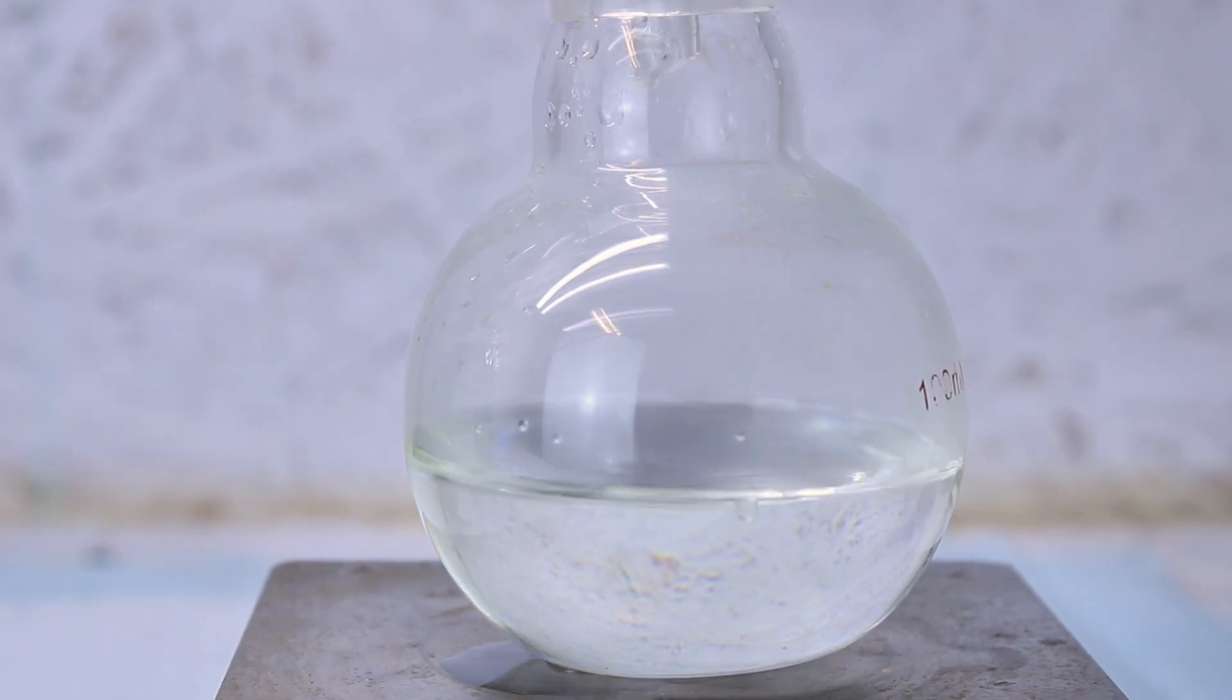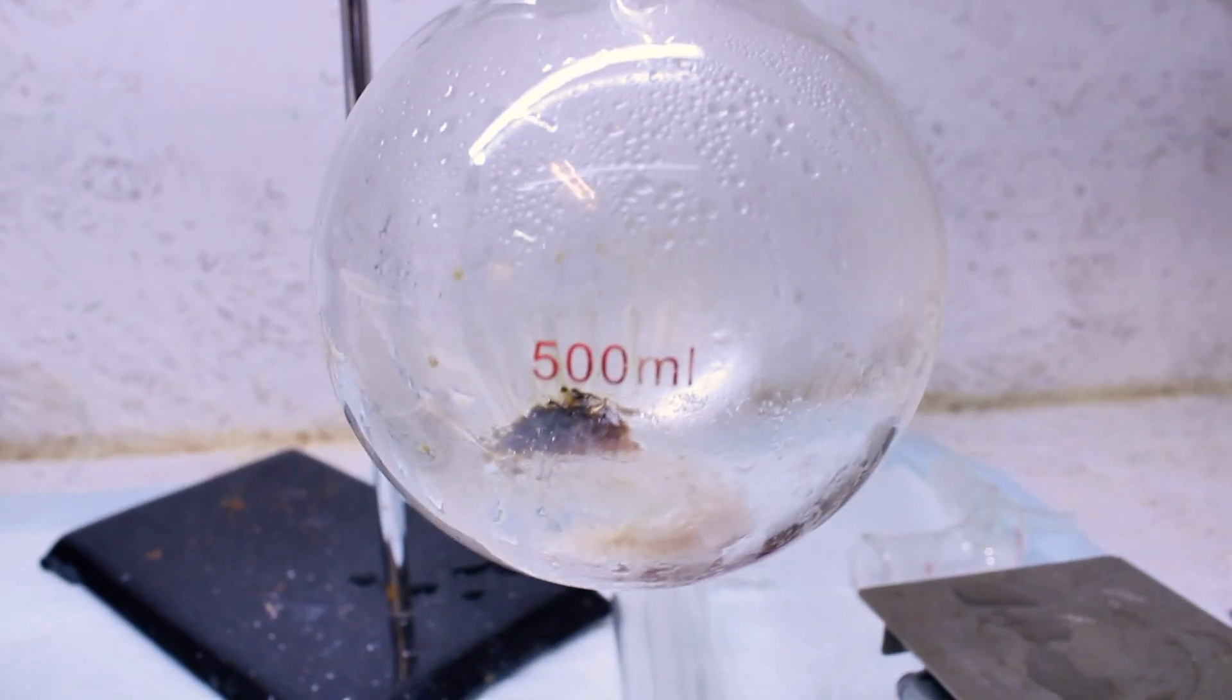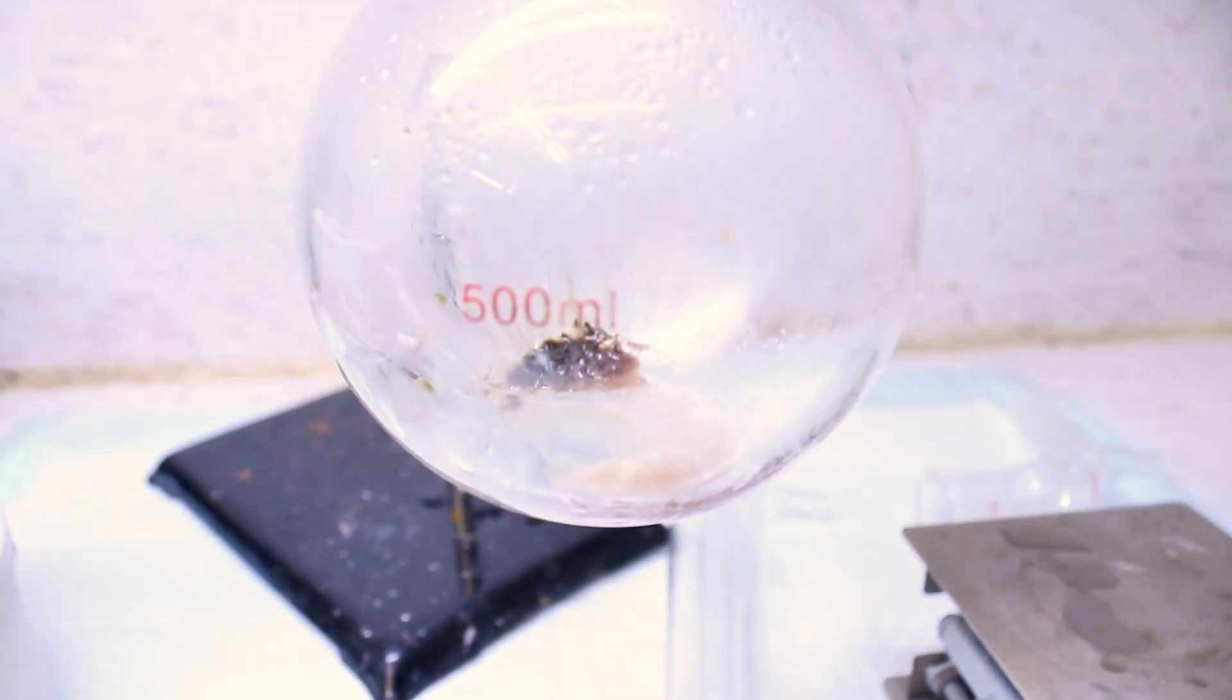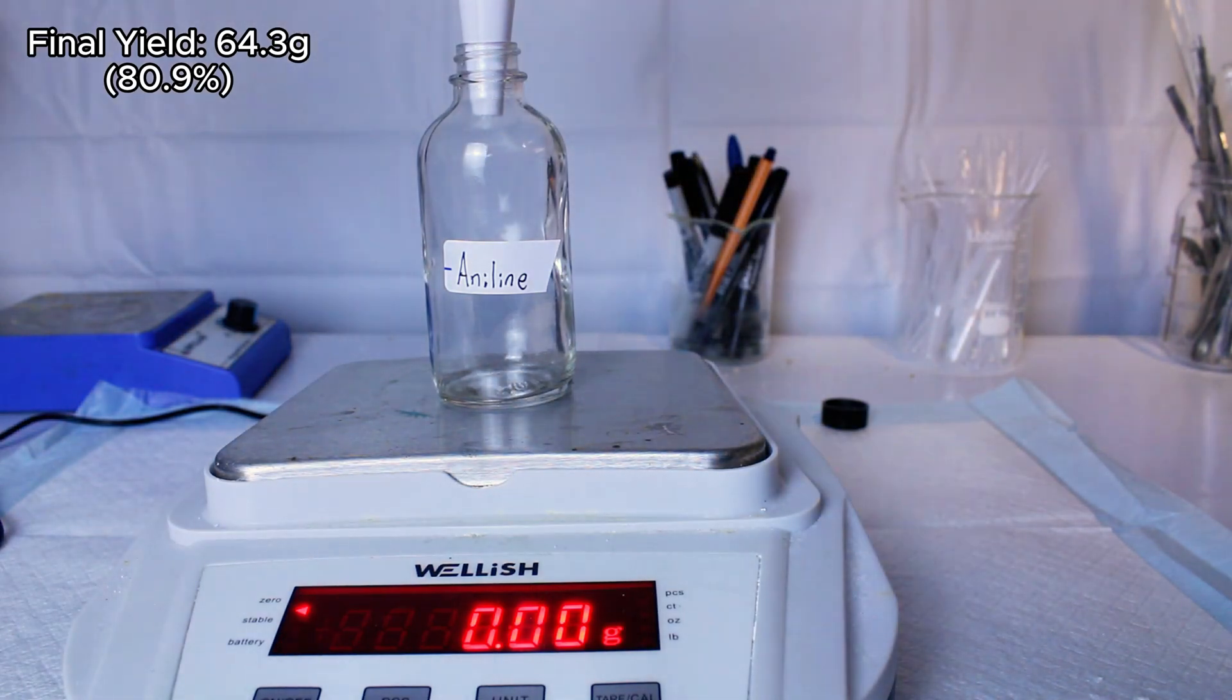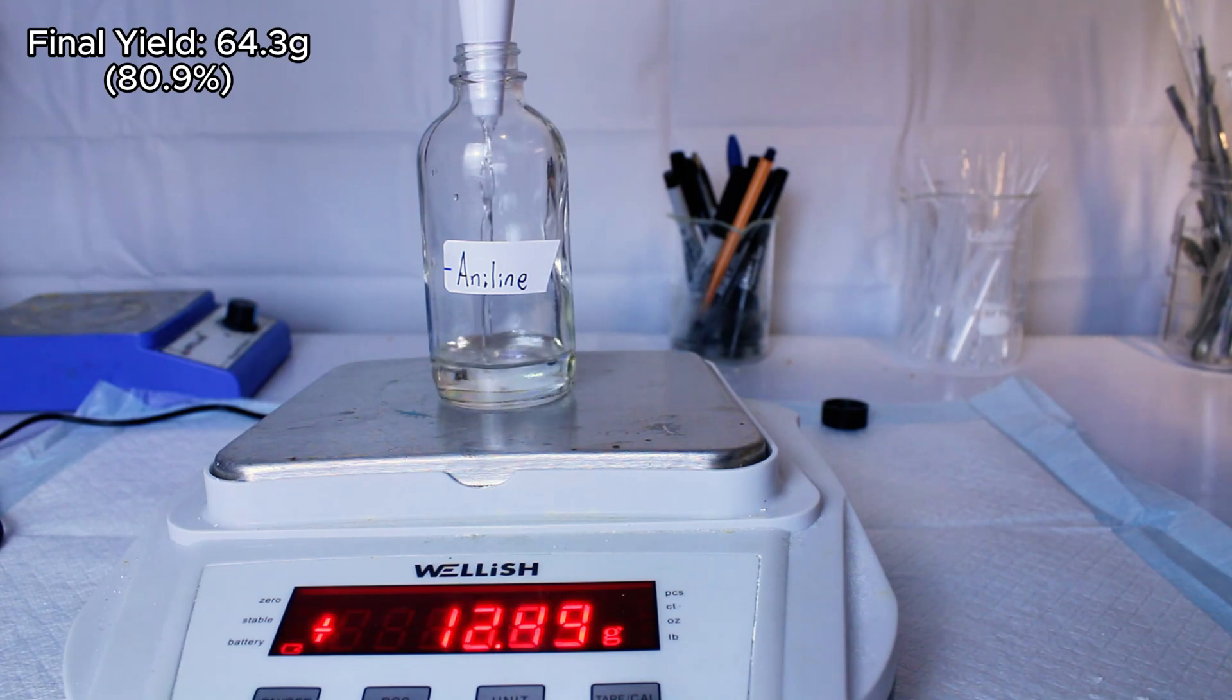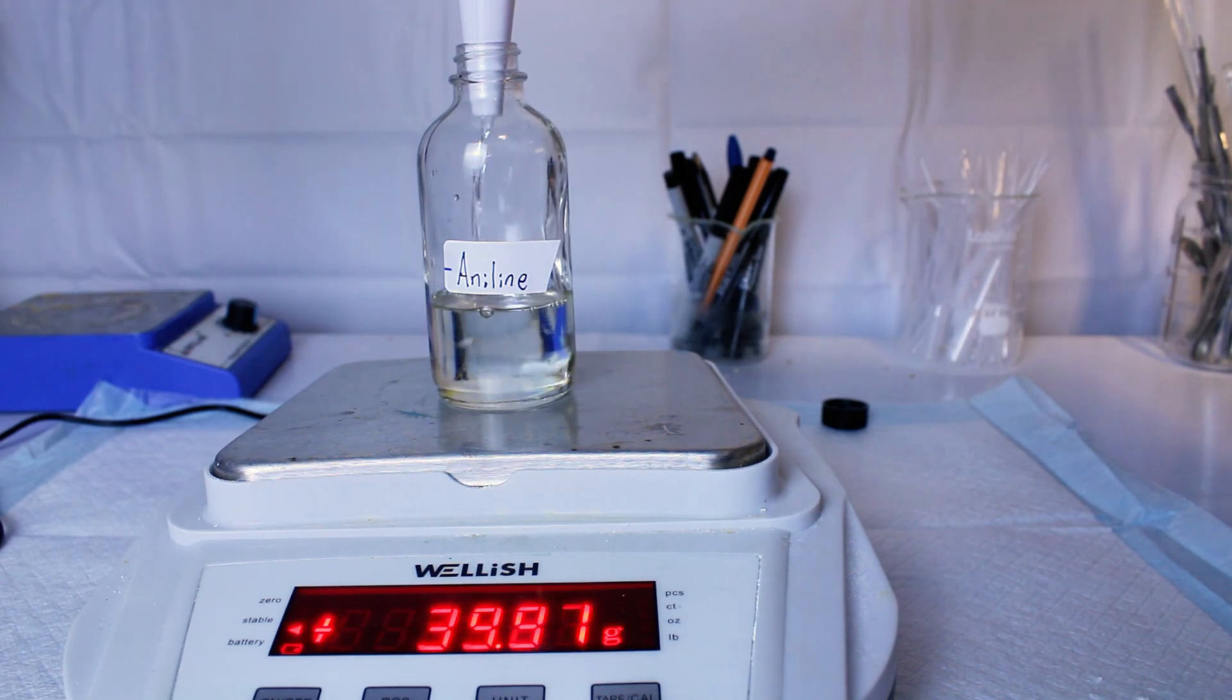Now, when this redistillation step is complete, there's a bit of blackened tar left in the boiling flask, and I collected 64.3 grams of mostly pure and mostly dry aniline. This represents an 80.1% yield, which I'm pretty happy with, especially considering how much lower my overall yield would be at this point if I had started with benzene.